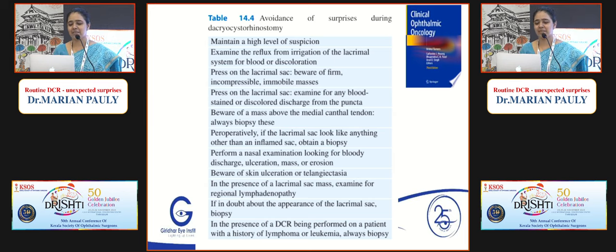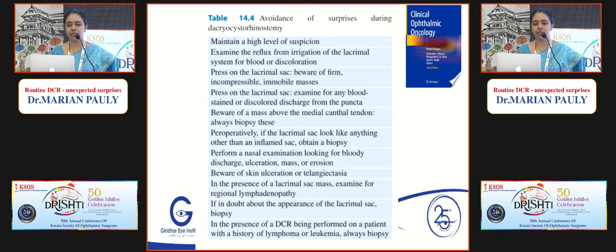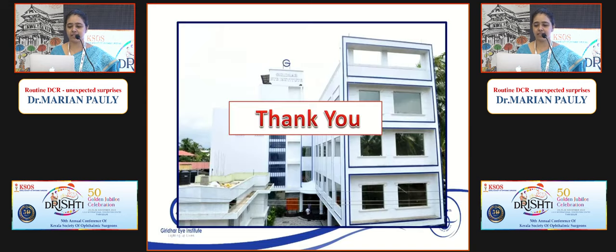How to avoid surprises during DCR: maintain a high level of suspicion; examine the reflux from irrigation; press on the sac and beware of firm, incompressible, immobile masses; examine for any blood-stained tears; beware of a mass above the medial canthal tendon. Peroperatively, if the sac looks like anything other than an inflamed sac, obtain a biopsy. Perform a nasal examination. Beware of skin ulceration and telangiectasia in the presence of lacrimal sac masses. Examine for lymph nodes. If in doubt about the appearance of the sac, do a biopsy. Always biopsy in patients with history of lymphoma or leukemia. Conclusion: expect the unexpected, careful preoperative assessment, tackle intraoperative surprises for excellent outcome.